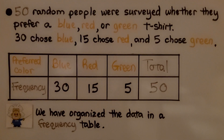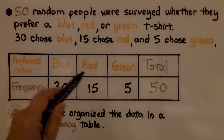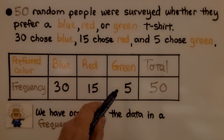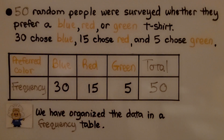So here's the data we're going to use. 50 random people were surveyed whether they prefer a blue, red, or green t-shirt. 30 chose blue, 15 chose red, and 5 chose green. Here is the 50 for the total number of people — we've organized the data in a frequency table.